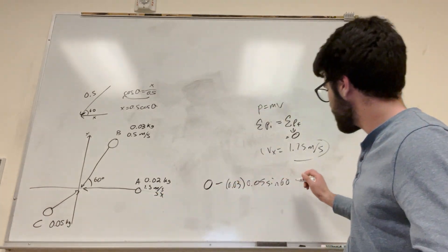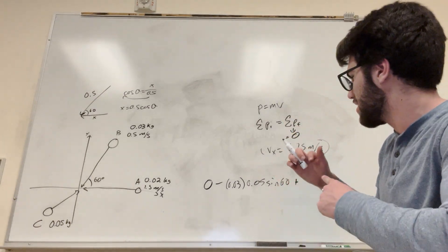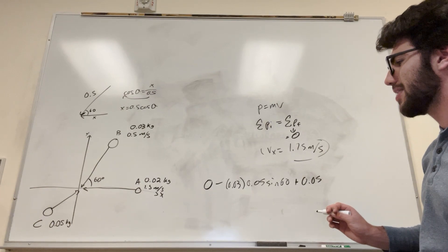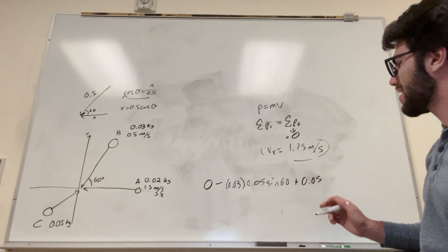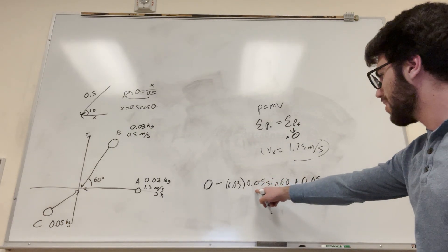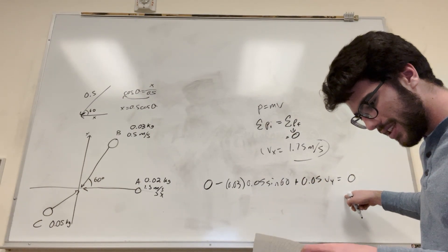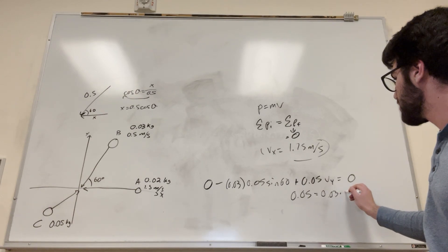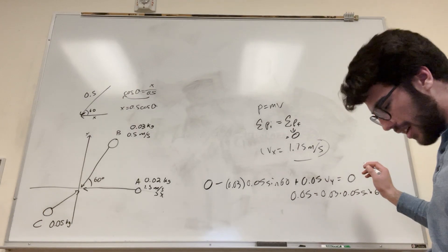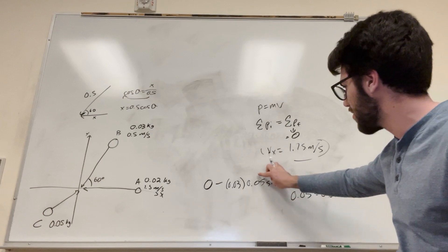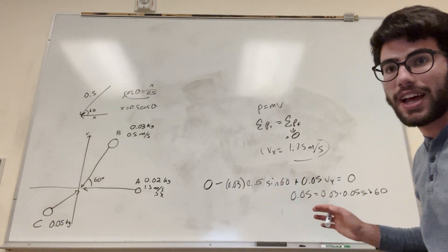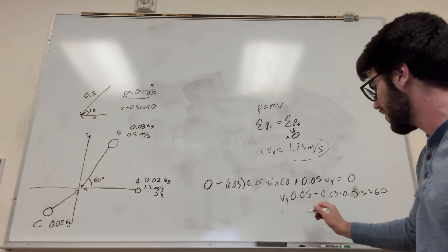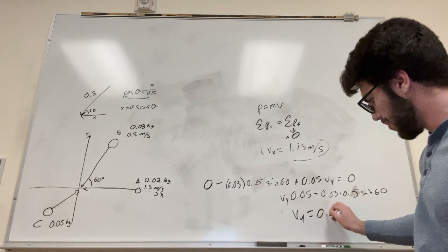Then we want the y component of c. c is going against the motion of b in the y direction, so this is plus 0.05 times v of y. This is equal to 0. So you subtract the b term to the other side: 0.05 v_y equals positive 0.03 times 0.5 times sine of 60. Then divide both sides by 0.05, and you get v of y is equal to 0.26 meters a second.